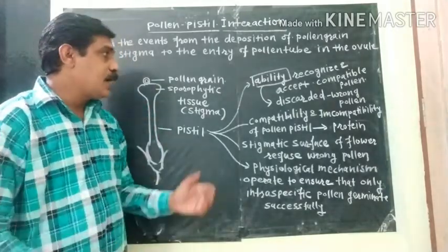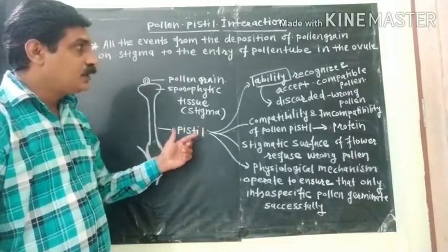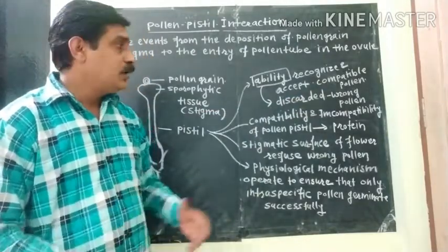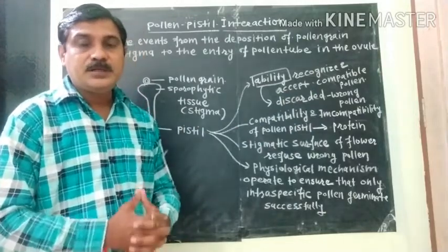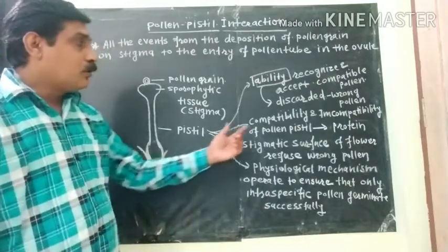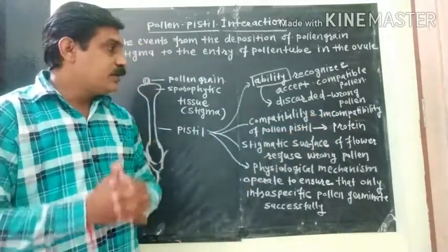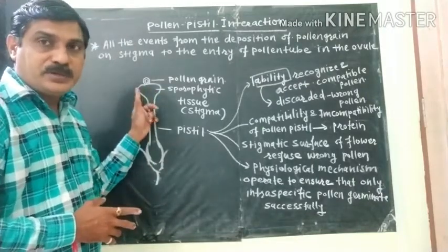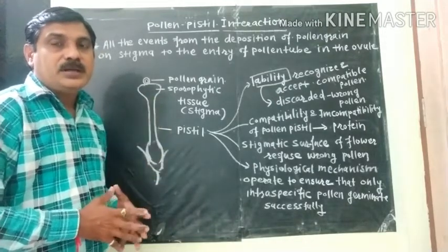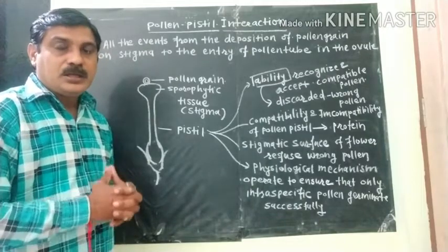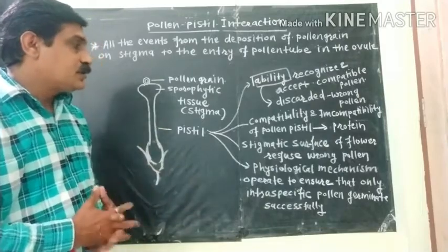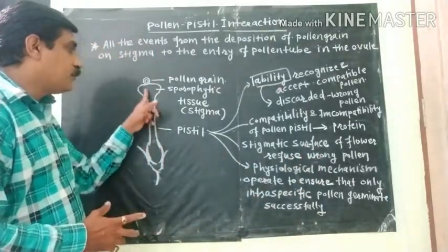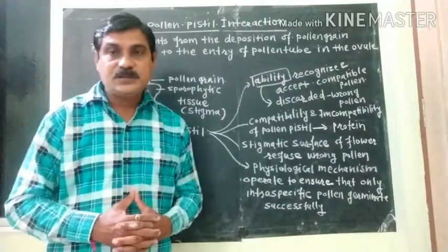This ability is present in the pistil — the ability to recognize and accept compatible pollen grain and, on the contrary, to discard the wrong type of pollen grain. The compatibility or incompatibility of the pollen grain is determined by a special kind of protein present in the pistil. With the help of that protein, recognition of the right or wrong type of pollen grain takes place. The stigmatic surface is responsible for the identification and rejection of the wrong type of pollen grain.